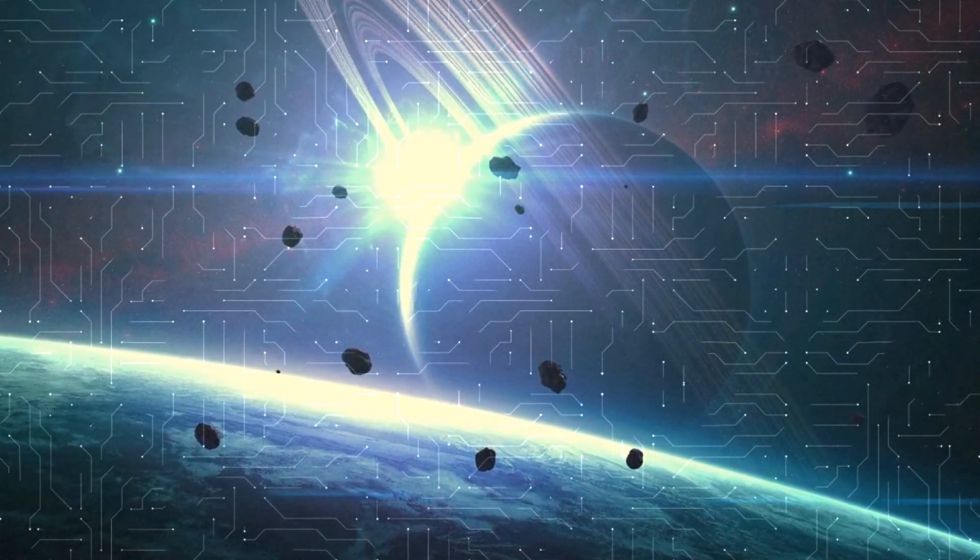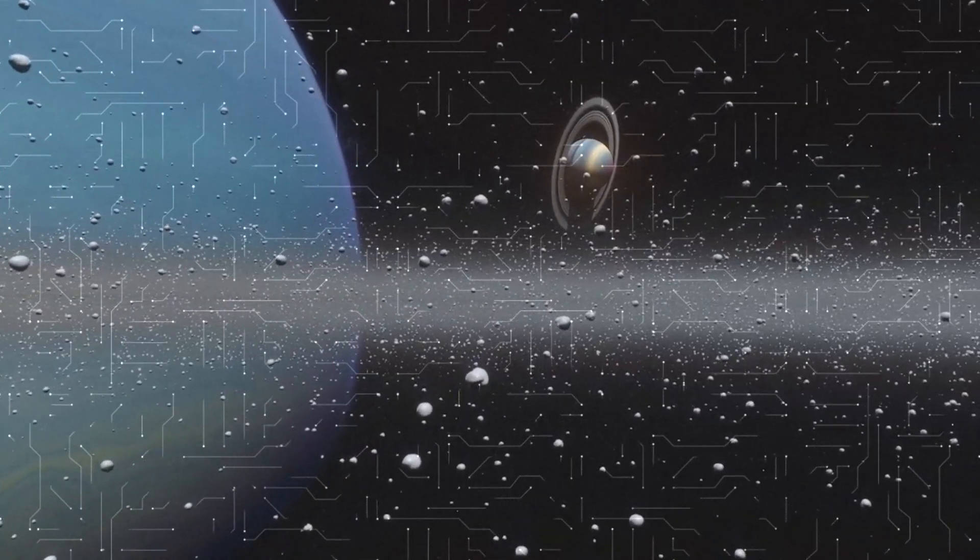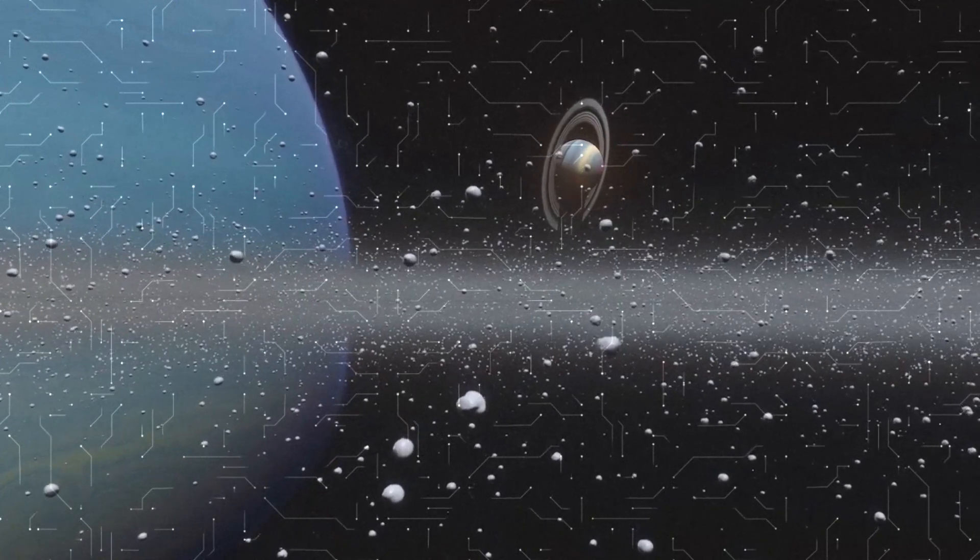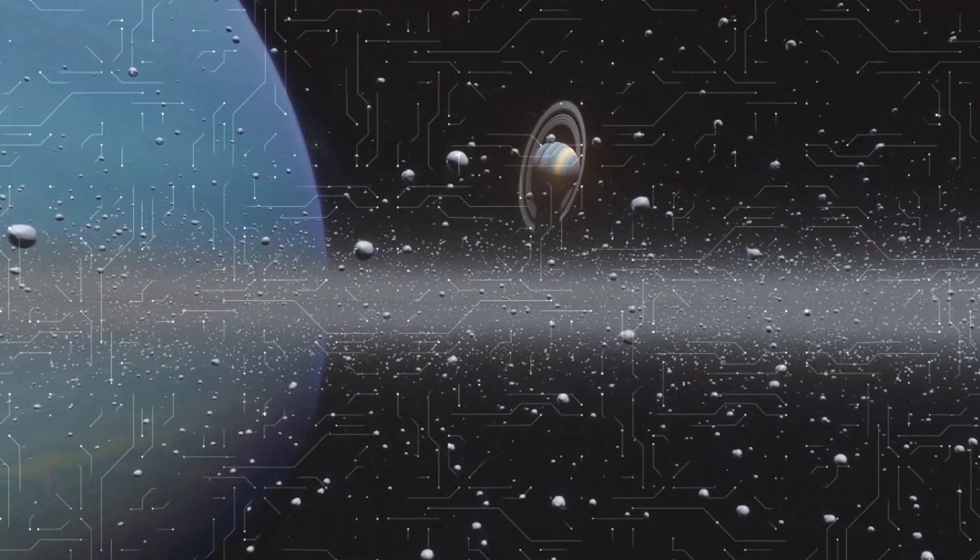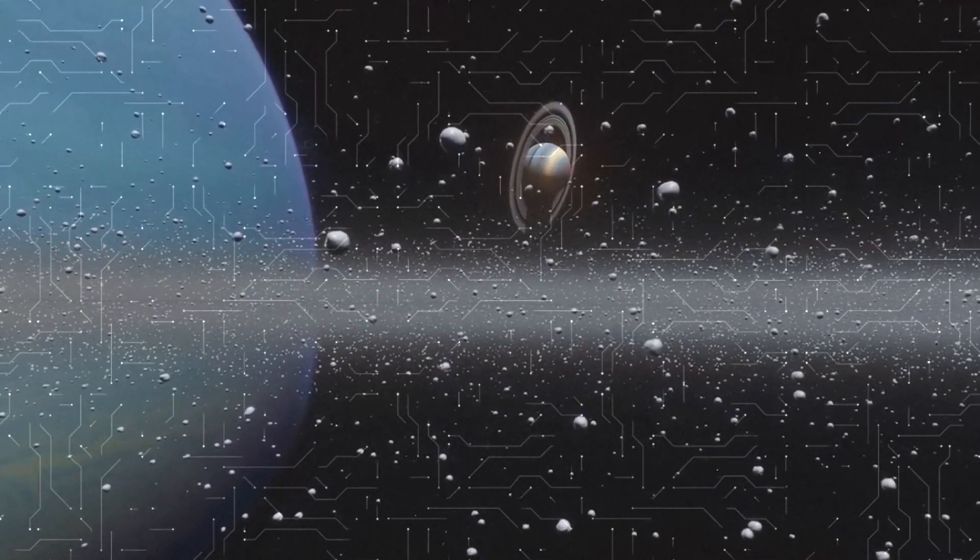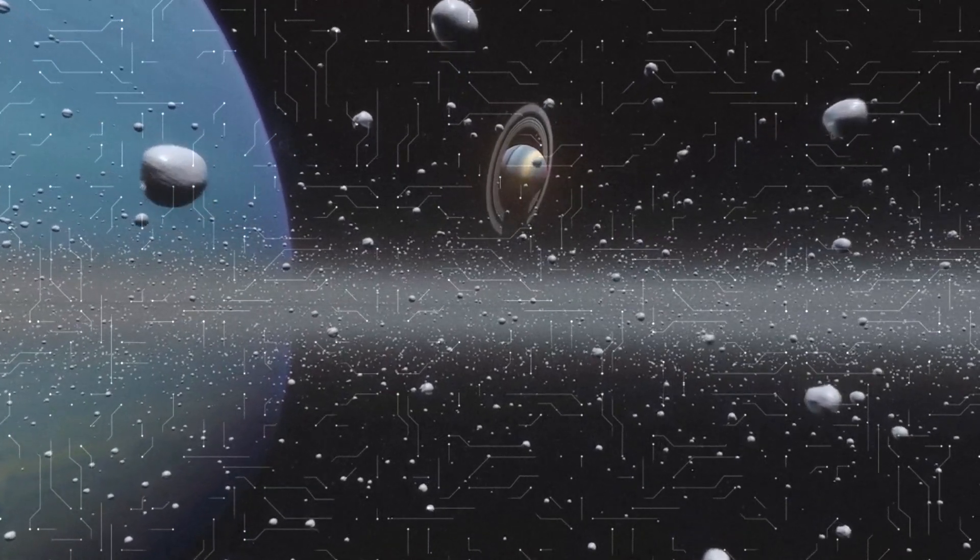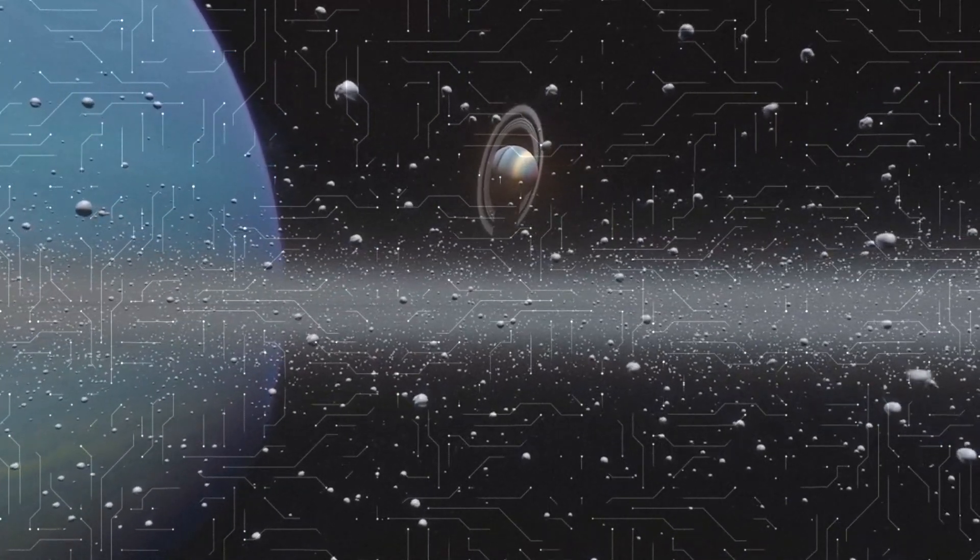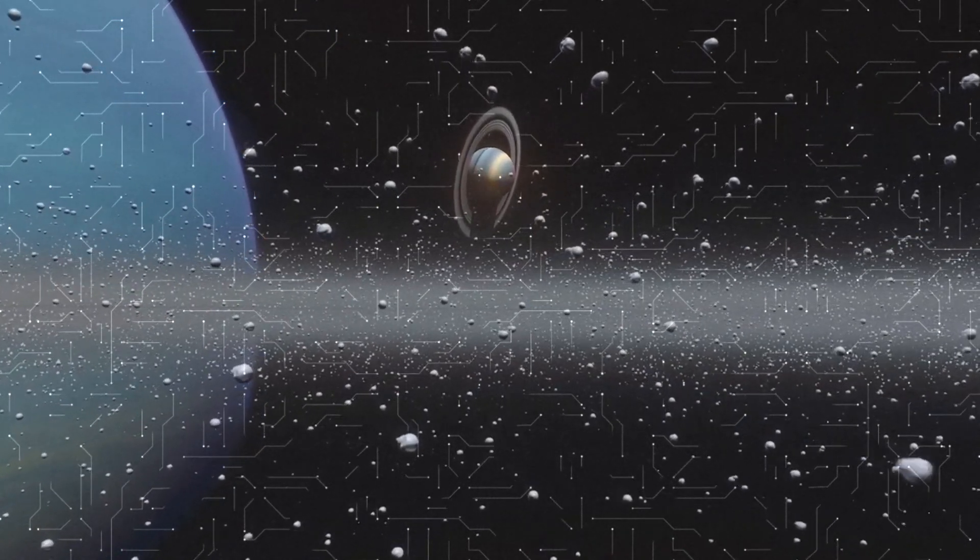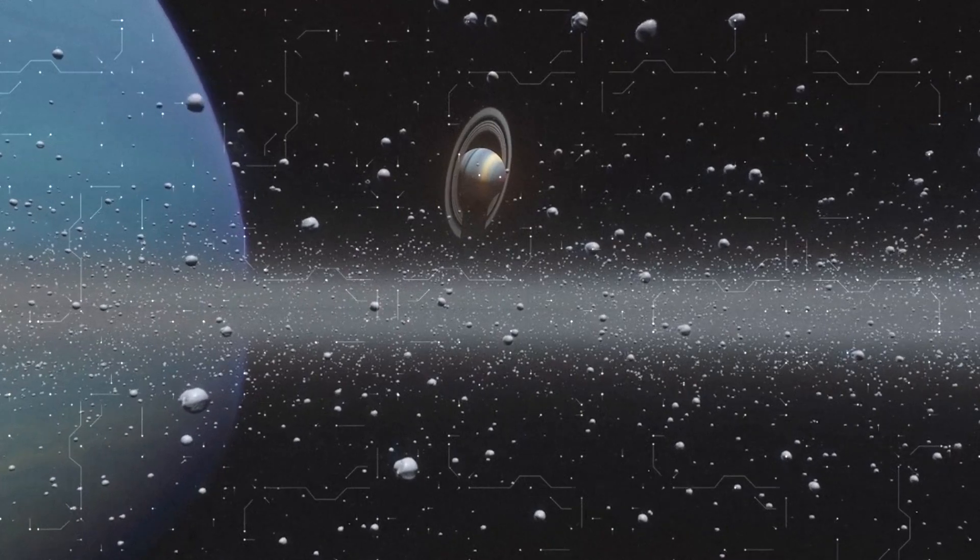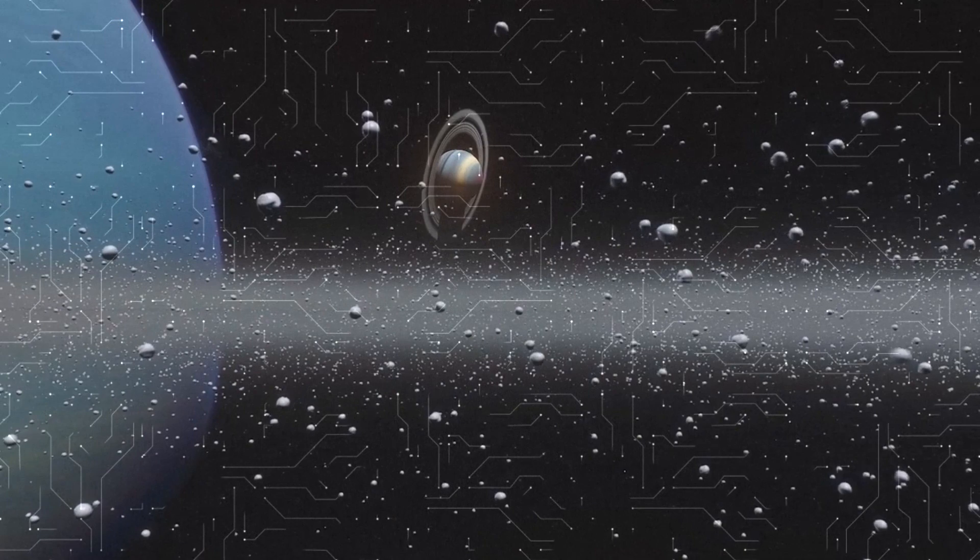5. Jupiter. Jupiter is the fifth planet from the Sun and the largest planet in the Solar System. It consists mainly of gases, predominantly hydrogen and helium. Jupiter is also known for its powerful atmospheric storms, the most famous of which is the Great Red Spot. The distance from Jupiter to the Sun is about 778.3 million kilometers. Fun fact, Jupiter has the largest moon system in the Solar System, including its largest moon, Ganymede, which is the largest moon in the Solar System.